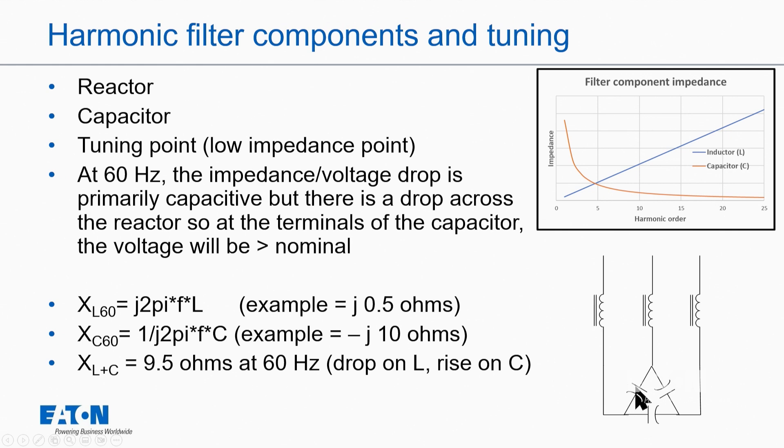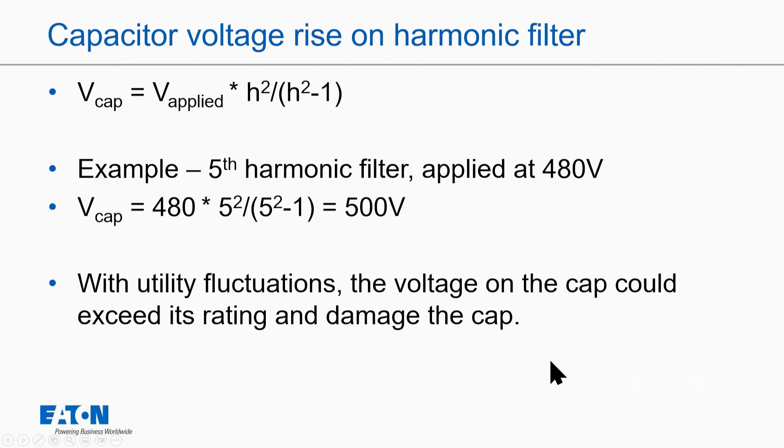So if I have, for example, j0.5 ohms and -j10 ohms, the total impedance across both is -j9.5 ohms. So in order to get the total voltage, I'm going to have that drop and that rise. So what that really means is I can actually have a higher voltage on my cap terminals than I really expect.